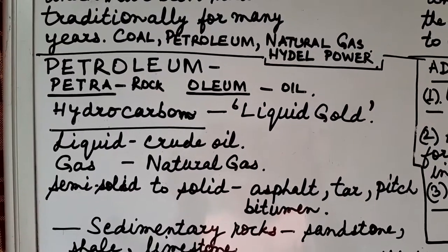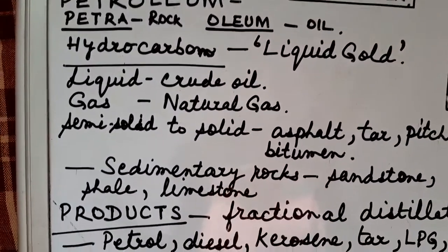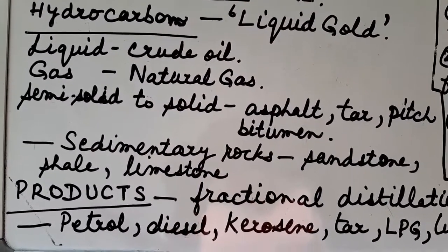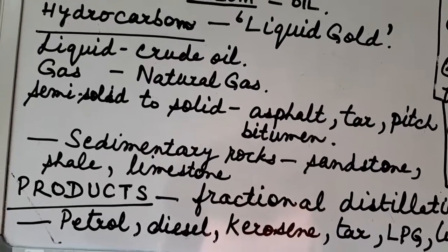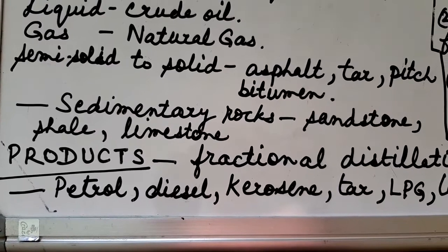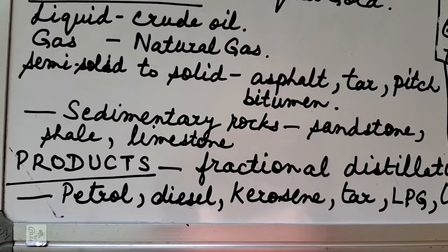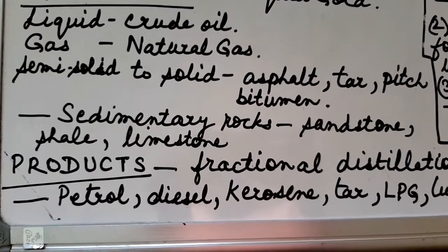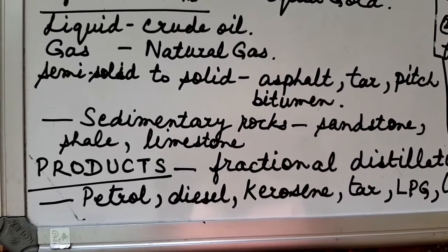Thermal power is also produced by petroleum, mainly near oil wells and refineries. Petroleum in liquid form is called crude oil, in gaseous form it's called natural gas, and in semi-solid to solid state it comes in the category of asphalt, tar, pitch, and bitumen. You must have noticed that tar and bitumen are used in the construction of roads.